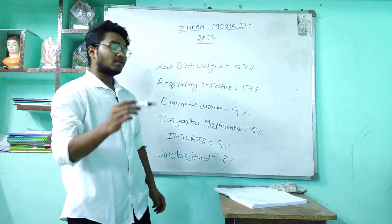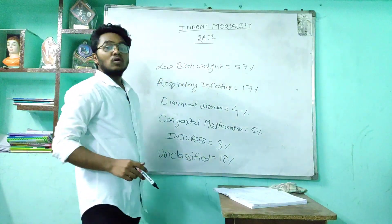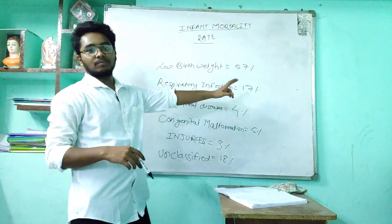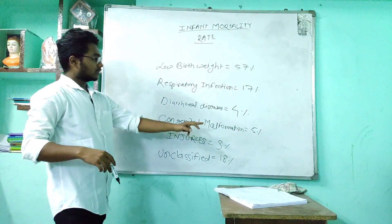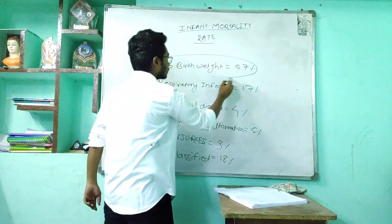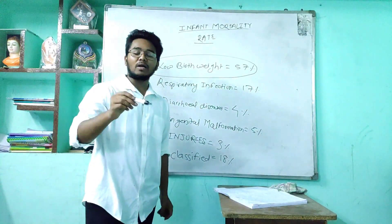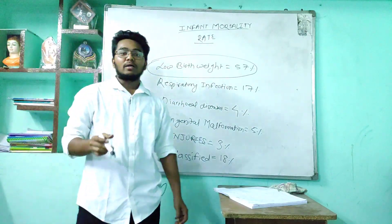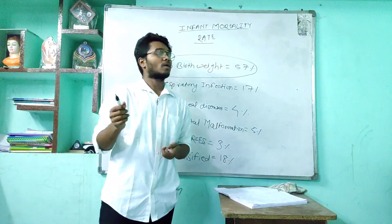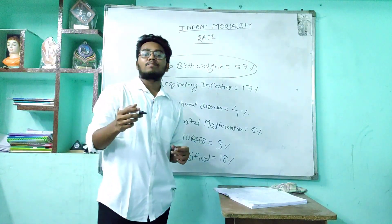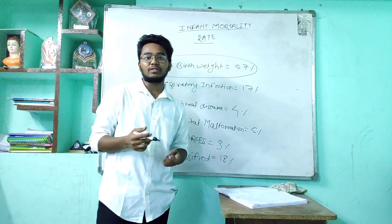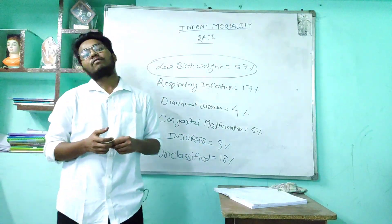The principal causes of infant mortality rate: low birth weight contributes 57%, respiratory infections 17%, diarrheal diseases 4%, congenital malformations 5%, injury 3%, and unclassified 18%. In India and other developing countries, neonatal deaths contribute a major part to IMR, along with diarrheal diseases, congenital malformations, and respiratory infections.